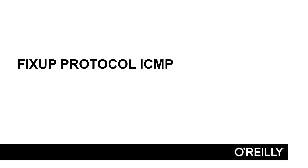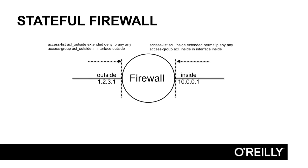This video is about the command fix-up protocol ICMP. The Cisco ASA firewall is stateful, meaning that traffic is filtered based on the first packet in the flow. We have inbound access lists on two interfaces: an inside access list allowing all traffic with a permit IP any any statement, and an access list on the outside interface that is denying all traffic.